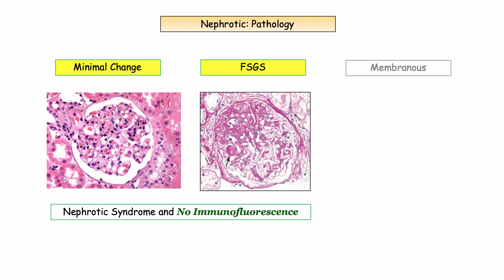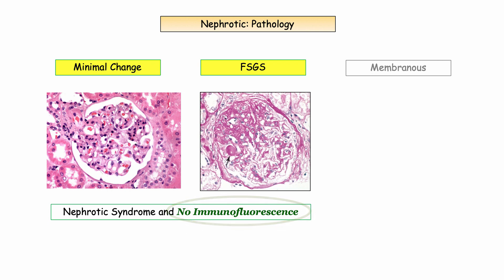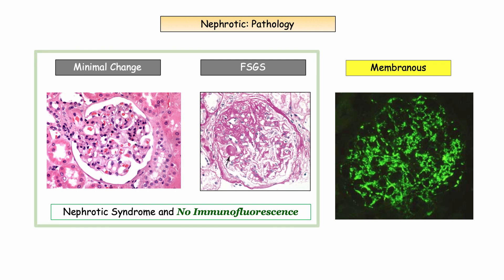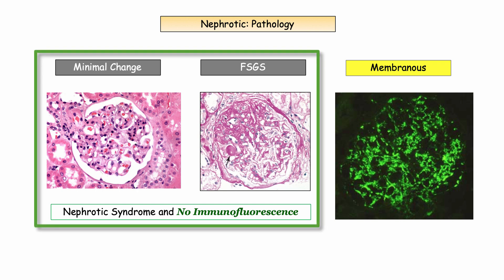Importantly, immunofluorescence does not play a role in diagnosing minimal change or focal segmental. If a patient with nephrotic syndrome (not one of the overlap syndromes) has positive immunofluorescence staining for immune complexes, then membranous nephropathy should be on your short list. The lack of immunofluorescence in minimal change and focal segmental is an important distinguishing feature.